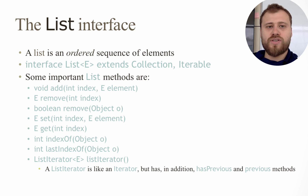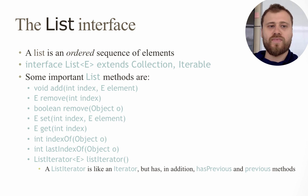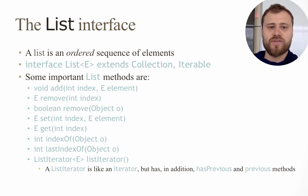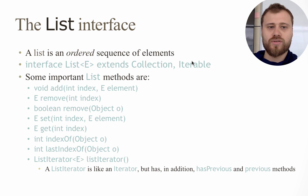The first collection interface we'll learn is List. A List is an ordered sequence of elements. It extends Collection and Iterable, so you can iterate over all the elements of a list.